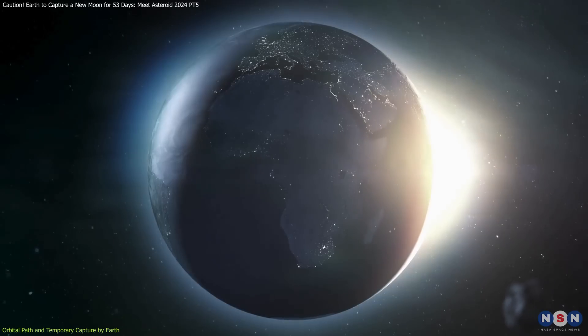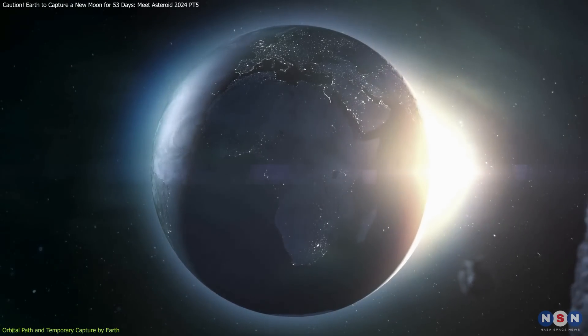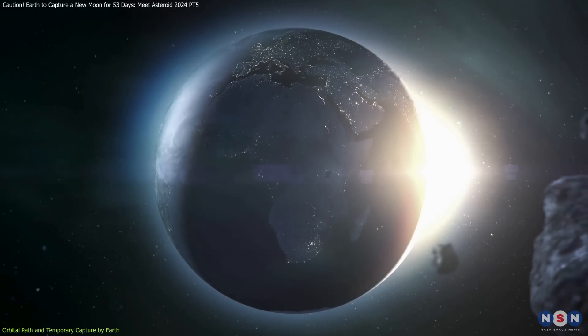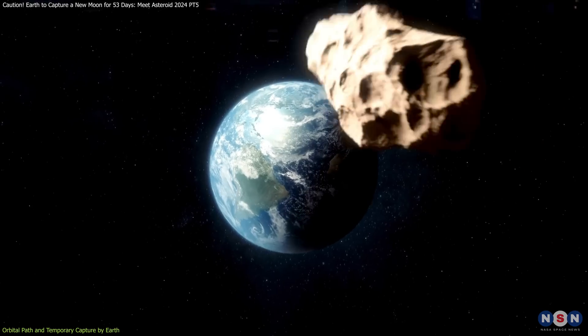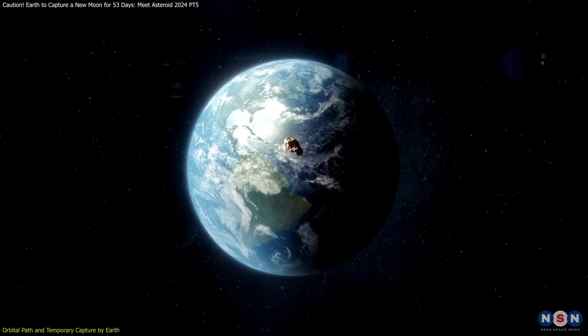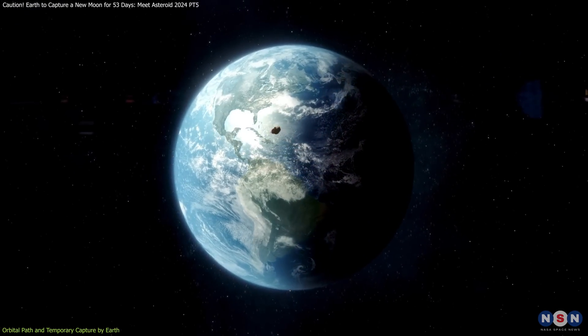When an asteroid like this one approaches Earth, it enters a region of space where our planet's gravitational pull starts to dominate over the sun's. If the asteroid's speed and trajectory align perfectly, it can enter a temporary orbit around Earth.